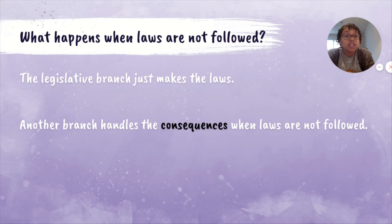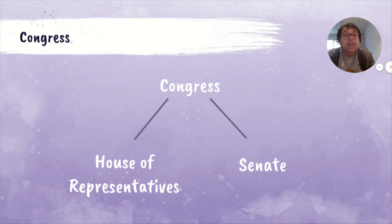Let's talk about who is in the legislative branch. The legislative branch is made up of the United States Congress, but Congress has two parts. Congress is the House of Representatives and the Senate — one part is the House of Representatives and another part is the Senate, and they come together to make Congress.